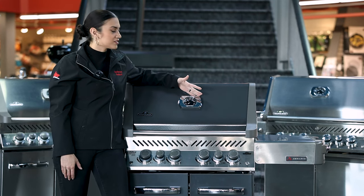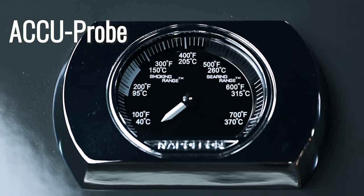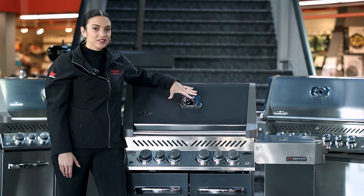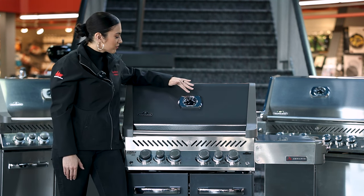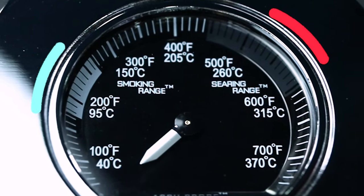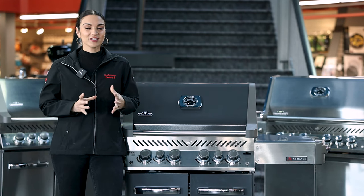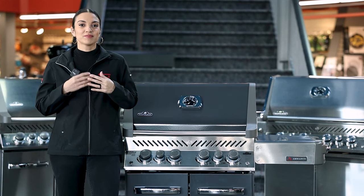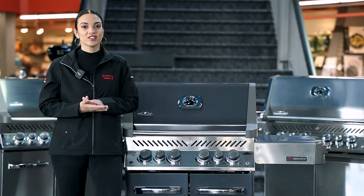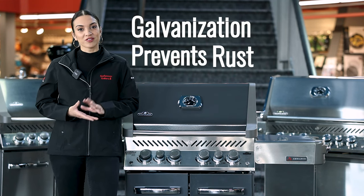On the lid, you'll find Napoleon's signature accu-probe thermometer. This thermometer accurately measures the temperature inside the cookbox. On the face of the thermometer, you'll find the temperatures as well as smoking range and searing range, helping you determine whether the barbecue is ready for those methods. The Ambiance also features galvanized stainless steel. Galvanization is beneficial because it's basically applying a layer of zinc to stainless steel, preventing moisture from getting in and creating corrosion and rust.